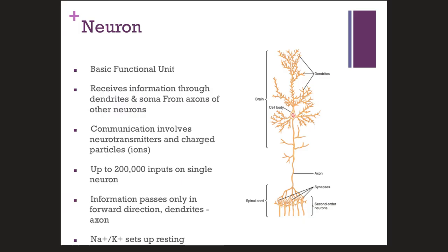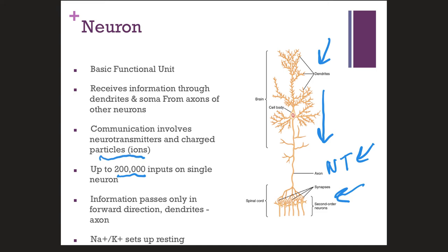For neurons to carry out their activity as the main functional unit of the central nervous system, they have to receive information through their dendrites, convey that information down the length of their axon, and release neurotransmitter to communicate with other neurons — generally around 200,000 inputs attached to another neuron. When talking about activity within a single neuron, it involves the transmission of ions, of charged particles.